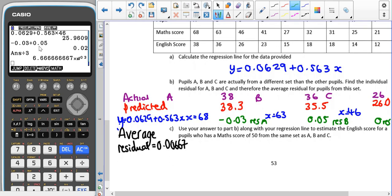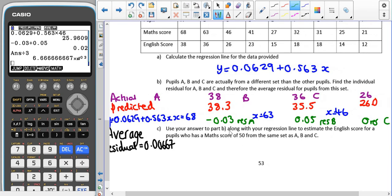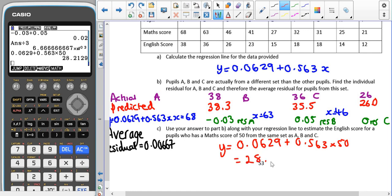I'm dividing by three because I have three values. Again, I'm using my answer to part b along with the regression line to estimate the English score for a pupil whose math score is 50 who's in the same set as A, B, and C. We're going to have y equals 0.0629 plus 0.563 times 50, which gives us 28.2129. When we've added on our value, the actual answer doesn't change.